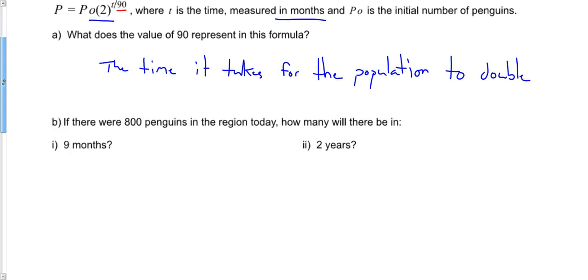So let's say that there were 800 penguins in the region today, how many would there be in 9 months or 2 years? Well, if there's 800, 800 is your starting value. So that becomes your P0 or your B value. So I'm going to substitute that into my original equation. So I know that I've got P equals P0 times 2 to the exponent T over 90.